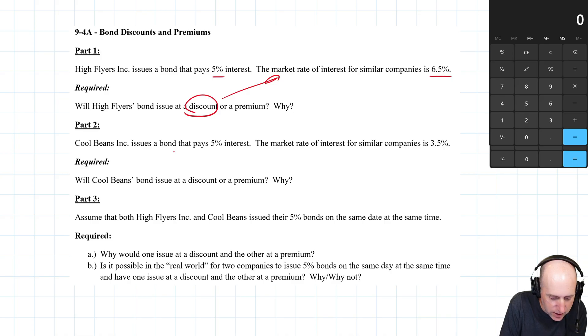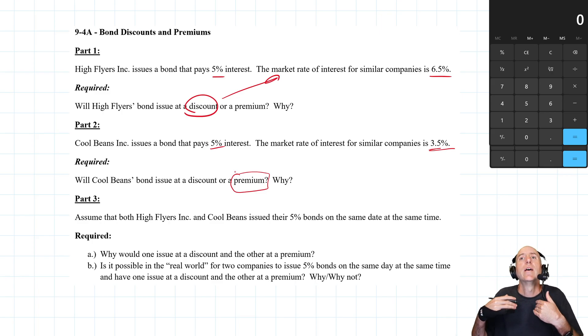Cool Beans Inc. issues a bond that pays 5% interest. The market rate for similar companies is 3.5%. Okay, so we're offering 5%. Similar companies are only offering 3.5%. Well, in this scenario, all of a sudden, we're much more attractive than those other companies. If we're more attractive than our competitor companies or similar companies to us, investors will be willing to pay a premium for our bonds. Because it's all relative. It's compared to similar companies with similar risk profiles.